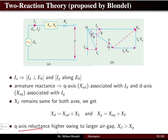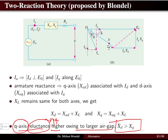The q-axis reluctance is higher due to the larger air gap in that region, so xd will be greater than xq.